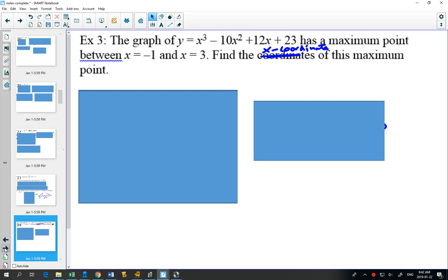This graph has a maximum point between x equals negative 1 and x equals 3. Find the x-coordinate of this maximum point. So hopefully you can see that we're doing a lot of these questions and they all start the same. You're going to need to find your derivative and find your critical point.